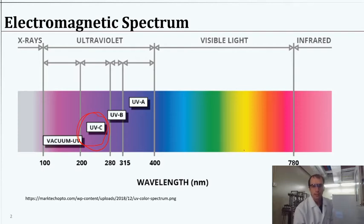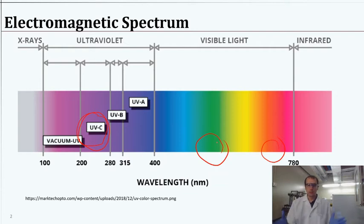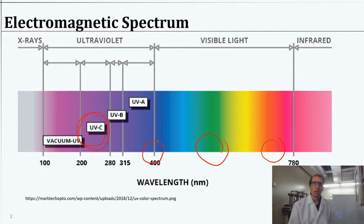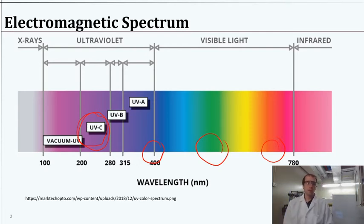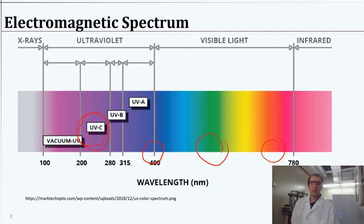We can use ultraviolet light to disinfect and treat water. This UVC range is the type we sometimes use for treating water. The red would be a laser shining that color. Green is usually 532 nanometers. And the violet is just at the range where we can almost not see it — our naked eye cannot see much below 400 nanometers. So those are the three lasers we're using today.